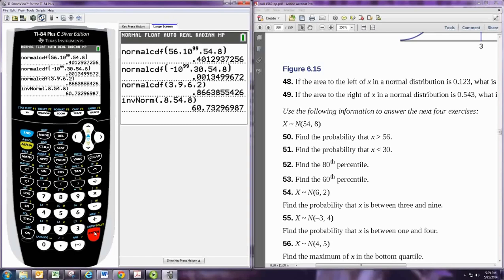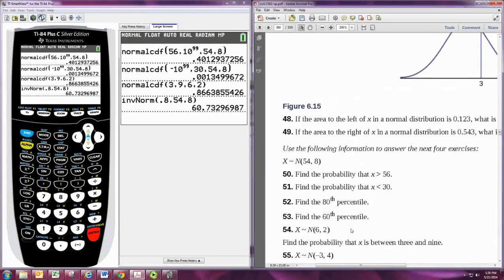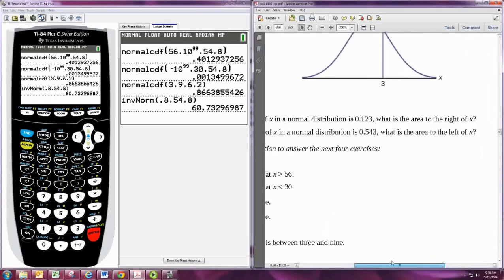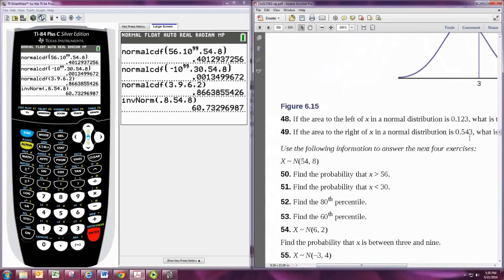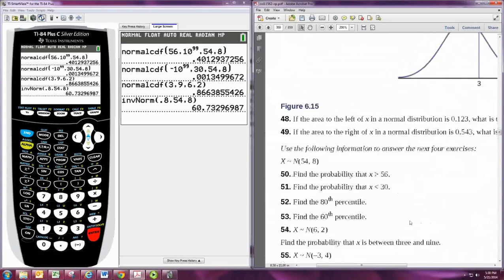Now, suppose we wanted to find the value of the random variable that created the third quartile. Or, let's see, let's see if there's a problem in here like this. Oh, here we go. We'll do number 49. The area to the right of x in a normal distribution is 0.543. So when you're given the area to the right, then we can also do this.